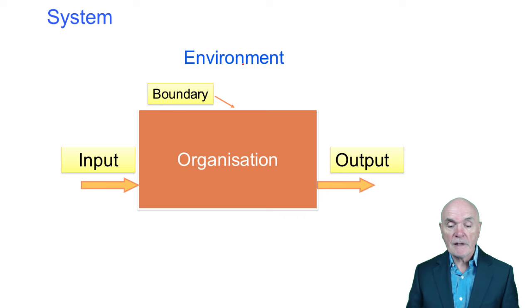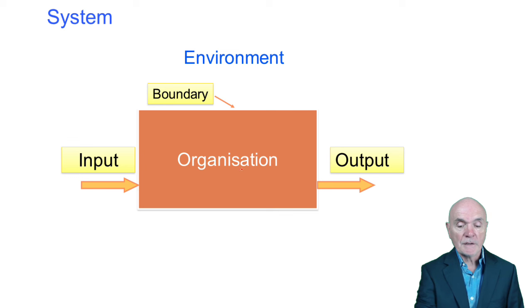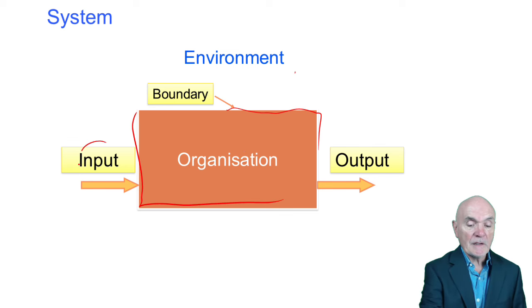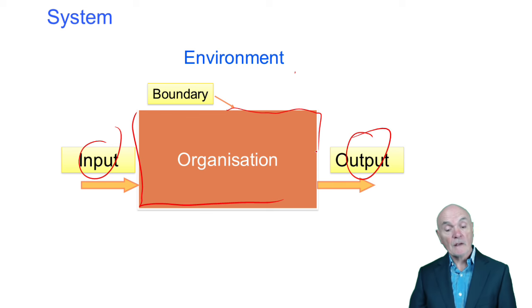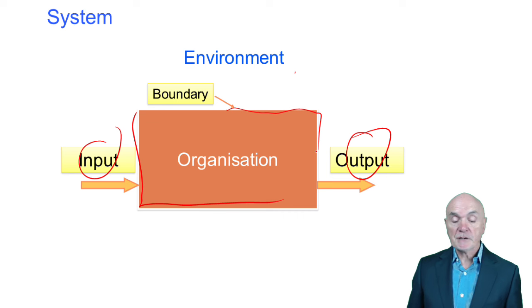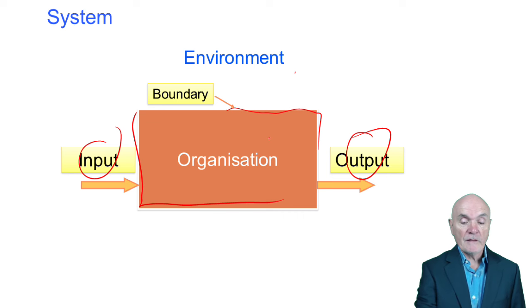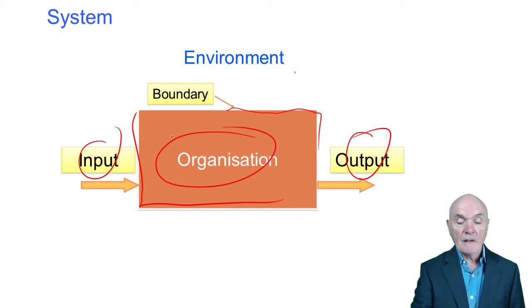But systems theory sees that you have the organisation, then there is around the organisation a boundary separating it from the environment. And generally speaking, there's input that goes into the organisation and output that comes out. So if there was a manufacturing company, you have the factory in here, you have the suppliers, the customers, the government and so on outside.